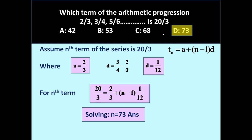We get n is equal to 73. So the 73rd term of this series will be equal to 20/3. In this manner, we can use this formula to solve various problems related to the nth term.